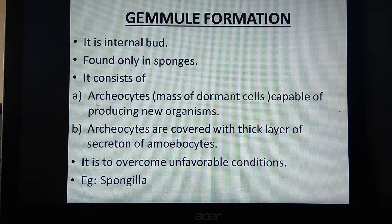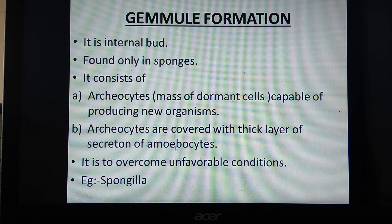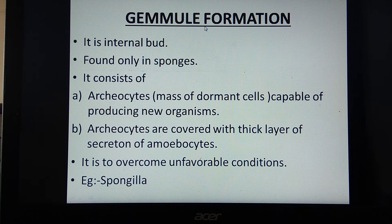A gemmule consists of archaeocytes, which are a mass of dormant — that is, inactive — cells capable of producing new organisms. Archaeocytes are totipotent cells, able to give rise to new organisms. Their mass is covered with a thick layer of secretion produced by amoebocytes. Gemmules are formed when conditions are unfavorable, as a survival mechanism. One example mentioned is Spongilla, which belongs to Phylum Porifera.